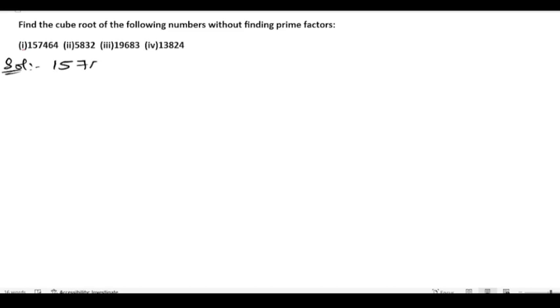We need to find the cube root of the following numbers without finding prime factors. Let us start the solution. First of all, we will write down the given number, that is 157464. Let us put the bar on three digits.